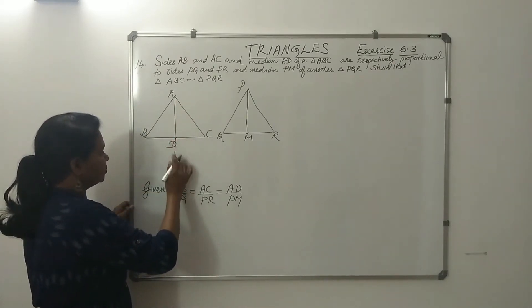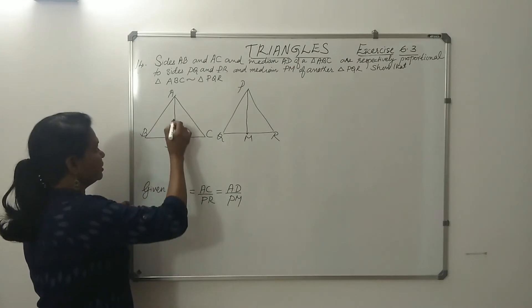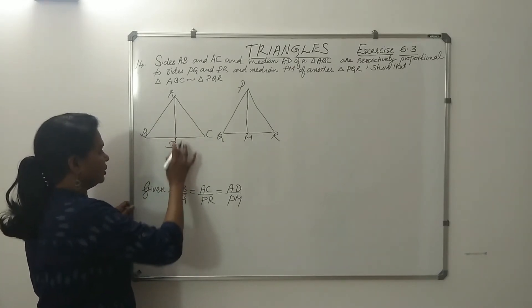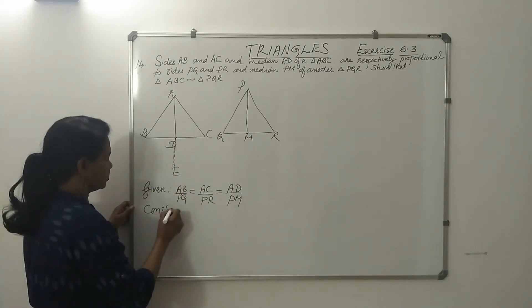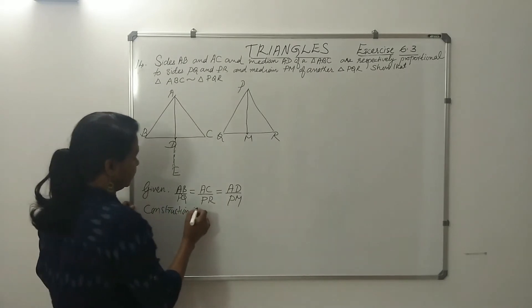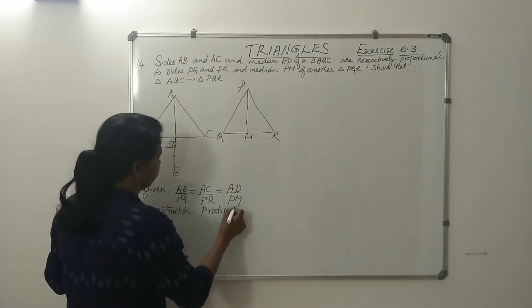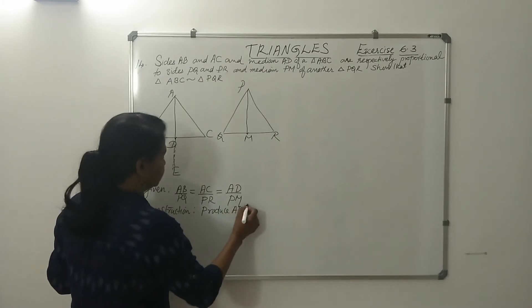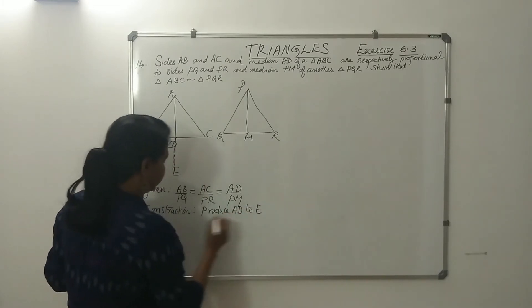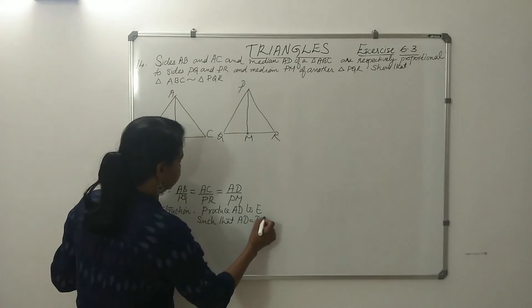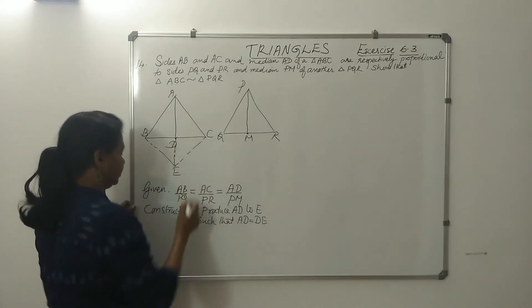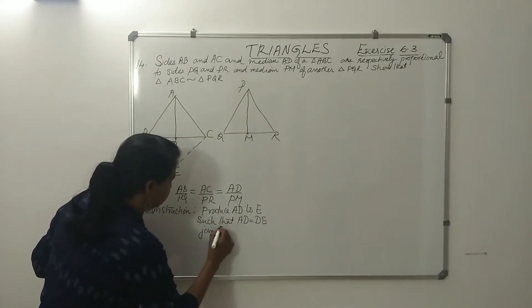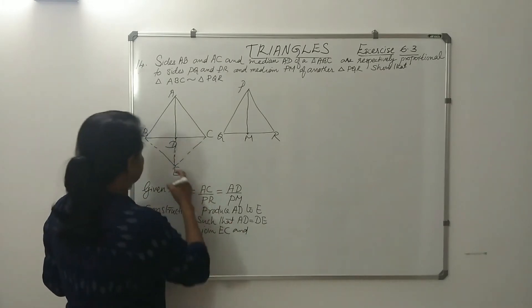Produce AD to a point E such that AD equal to DE. That is how it is constructed — AD extended to E. Join EC and B, join EC and B.